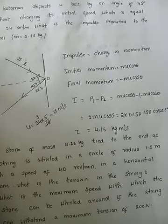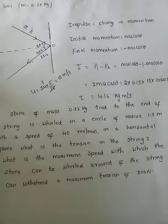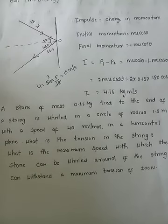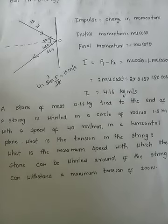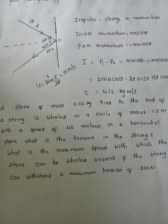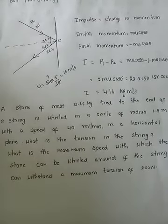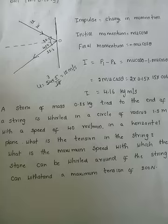The next problem is very important. A stone of mass 0.25 kg is tied to the end of a string and is whirled in a circle of radius 1.5 meters with a speed of 40 revolutions per minute in a horizontal plane. What is the tension in the string? What is the maximum speed with which the stone can be whirled if the string can withstand a maximum tension of 200 newtons?